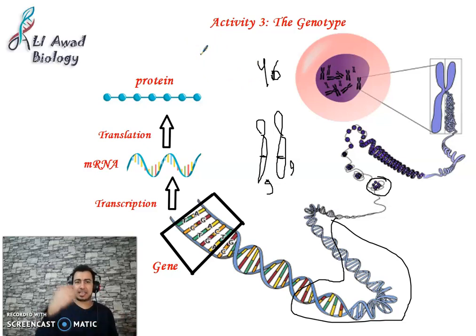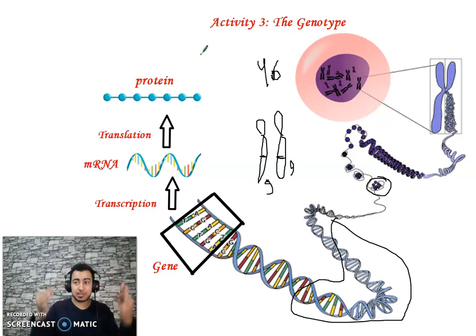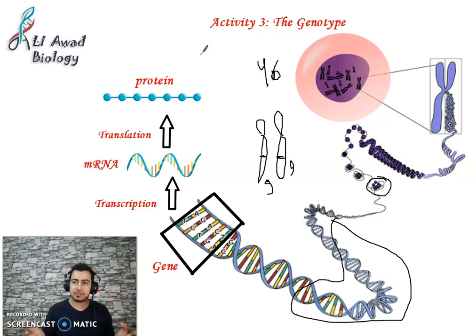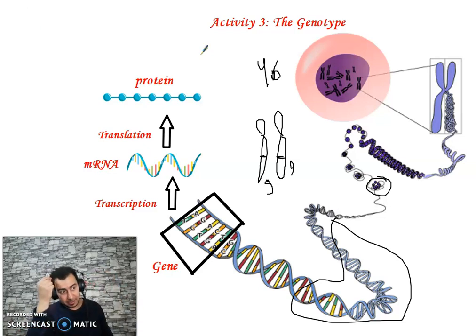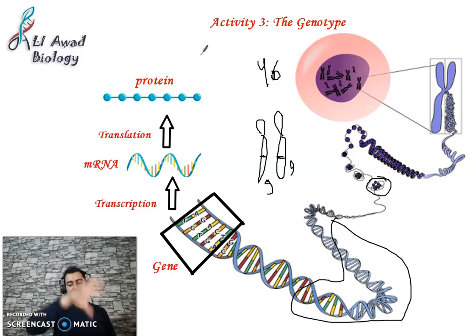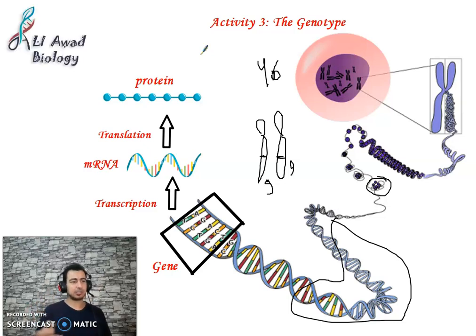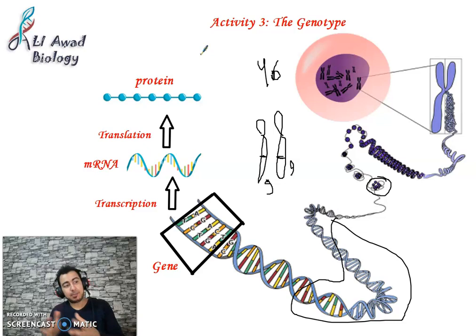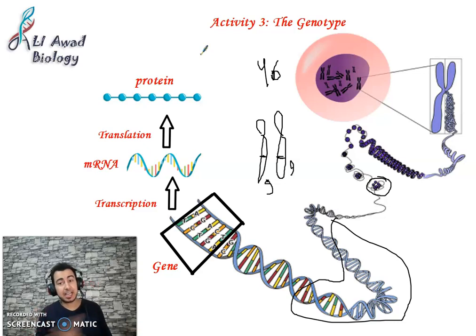All body cells came from one cell — the zygote — so all body cells have the exact same copies of genes. All cells contain the same genome. The genome is the total set of genes in the cell. There are nearly 23,000 genes, which are 2% of the DNA. The remaining 98% of DNA are non-coding — they do not produce proteins.